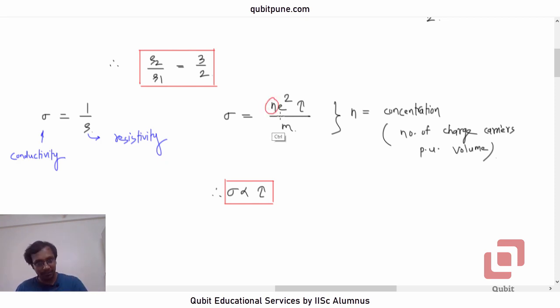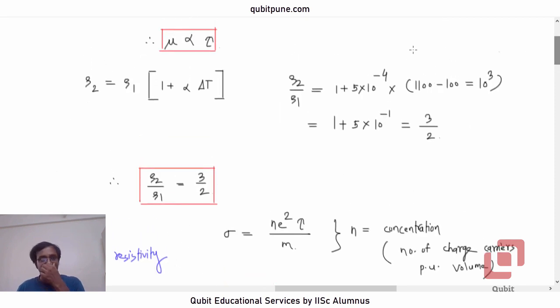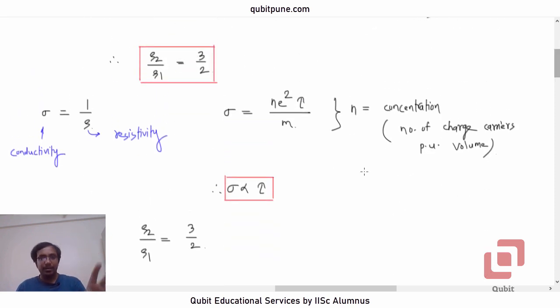So, again, we get the direct relationship between conductivity and relaxation time. Sigma is directly proportional to tau. And let us also remind ourselves about this result from kinetic theory that if we increase the temperature, then on an average, the RMS speed and the kinetic energy of the electrons increases. N is not going to change. When we increase the temperature, the effect is going to be on the relaxation time, not on any other parameter.